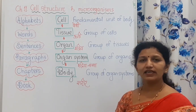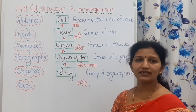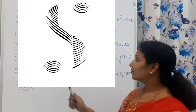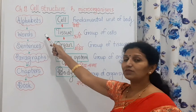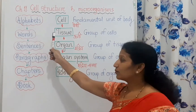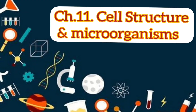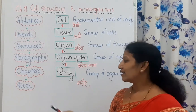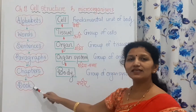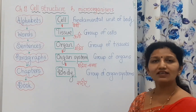Let me explain the formation of a book. There are some levels of organization when a book is formed. The basic unit of a book is an alphabet. From a group of alphabets, a word is formed. From a group of words, a sentence is formed. From a group of sentences, a paragraph is formed. Using these paragraphs, chapters are formed, and by the composition of all these chapters, a book is formed.